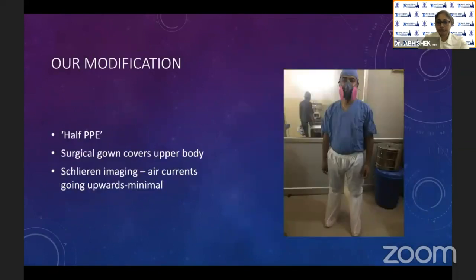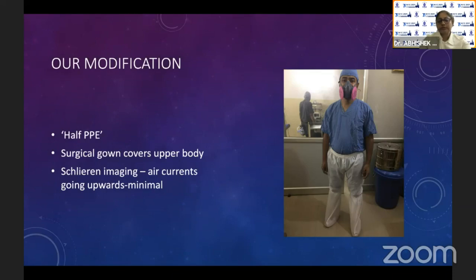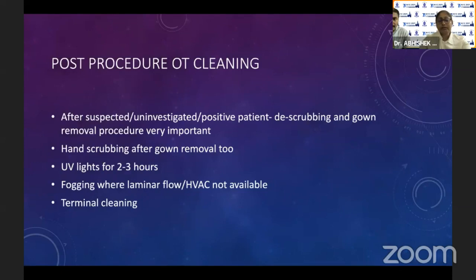The PPE kit is donned prior to gowning, and GA should be avoided as much as possible. A modification used in our center is a 'half PPE' — the PPE covers the lower half of the body while a surgical gown covers the upper body. Schlieren imaging studies have shown that in a patient using a properly sealed mask, upward air currents are minimal, so aerosol discharge is minimized.